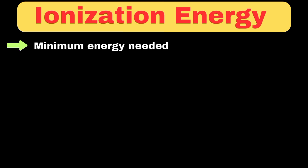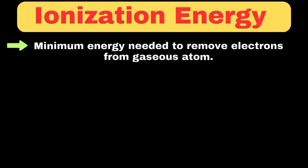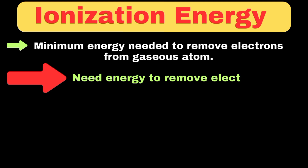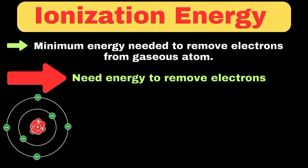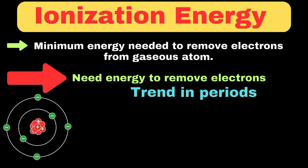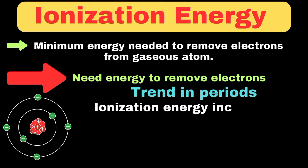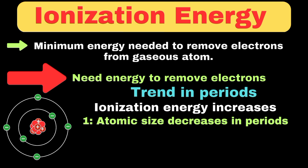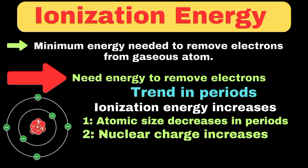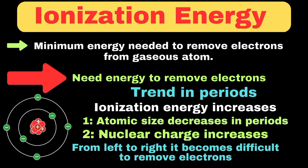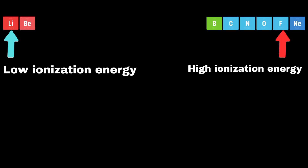Now we should move towards ionization energy. Ionization energy can be defined as the minimum energy required to remove an electron from a neutral gaseous atom in its ground state. This process always requires energy because we need to overcome the attractive force between the positively charged nucleus and the negatively charged electron. When we move from left to right in a period, ionization energy generally increases. This happens because atomic size decreases across a period, meaning outer electrons are closer to the nucleus, and the nuclear charge increases with each element. These two factors together make it harder to remove an electron. For example, in period two, lithium has a low ionization energy, while fluorine has a much higher ionization energy because its electrons are held more tightly by the stronger nuclear charge.